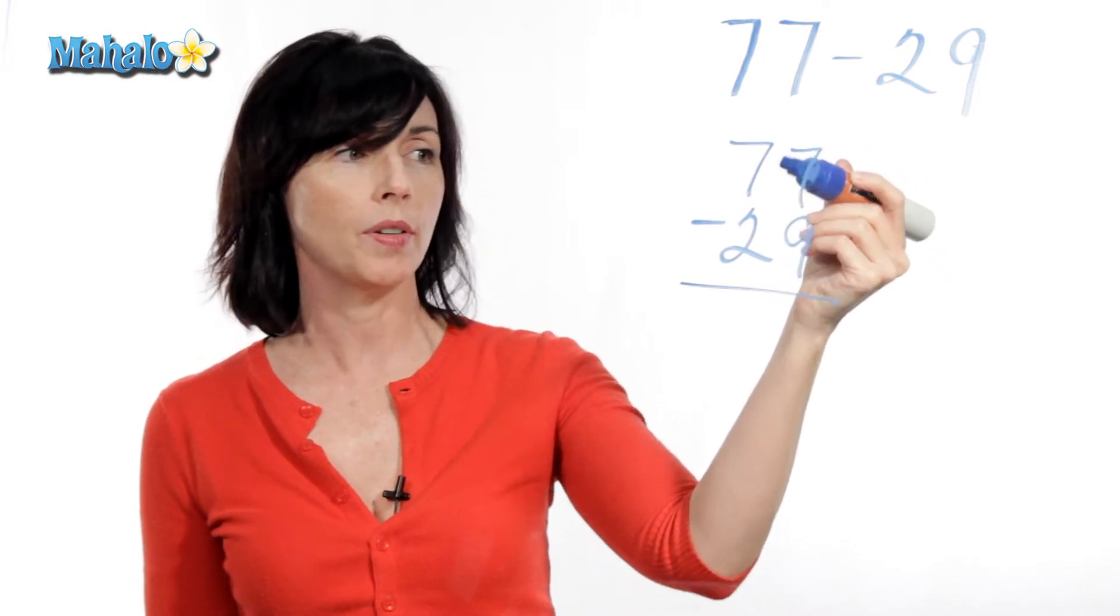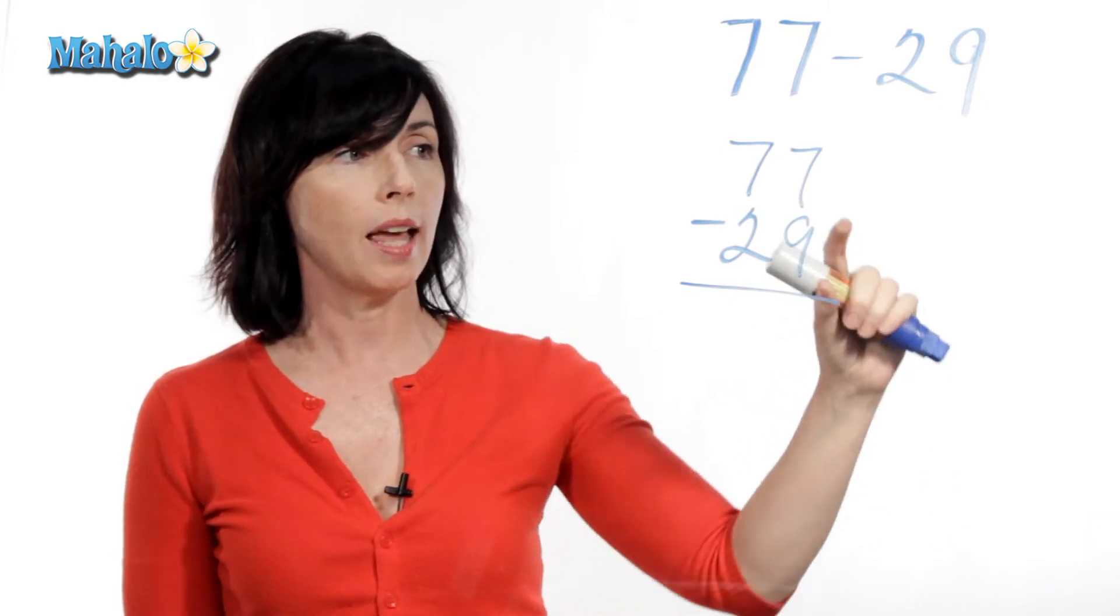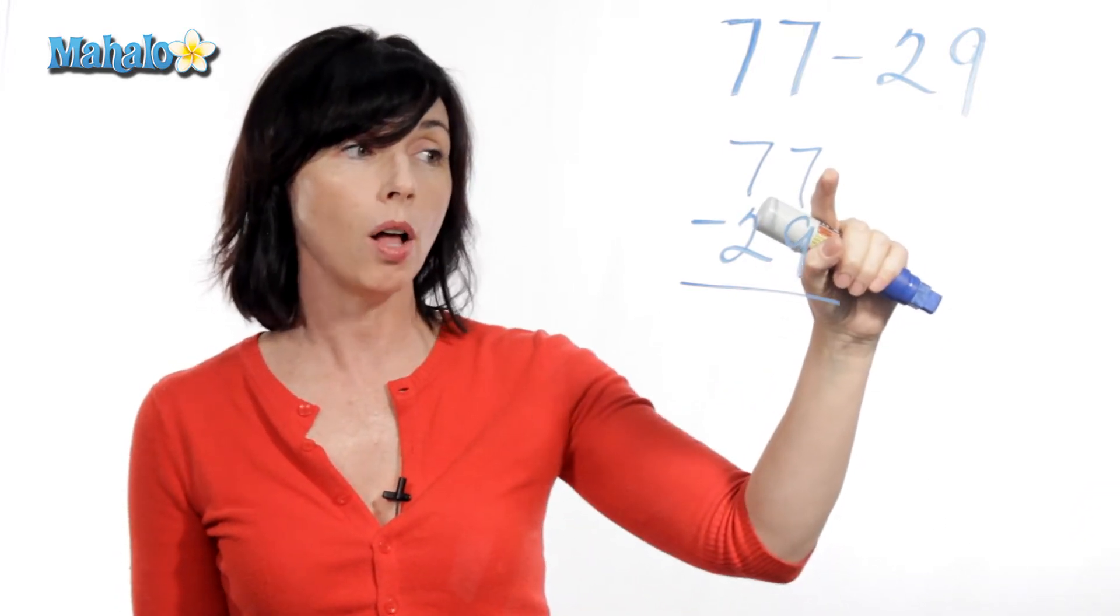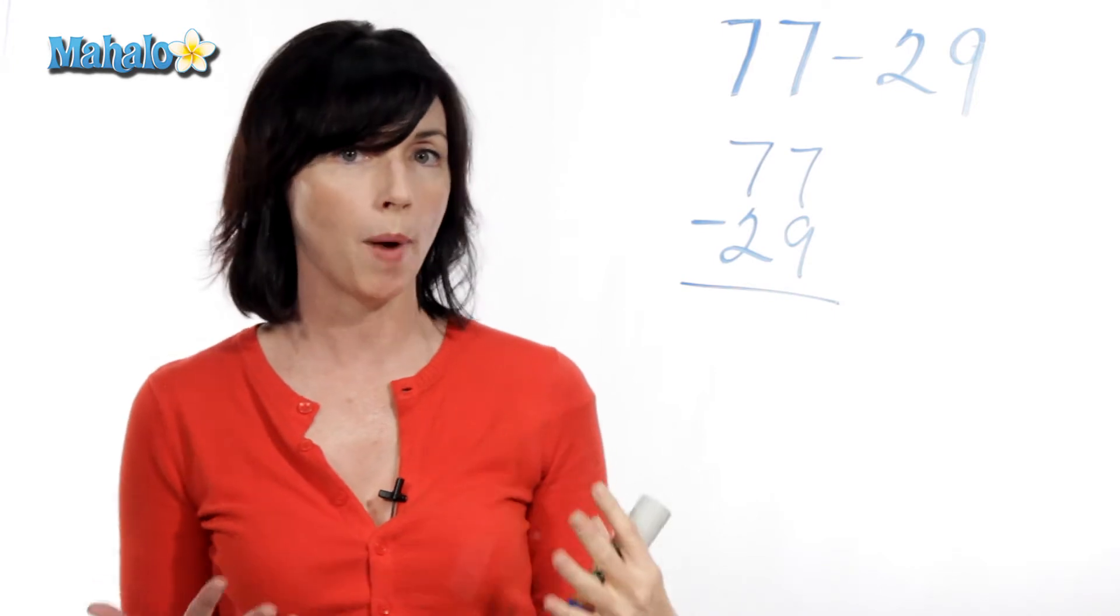It looks like I'm doing seven minus nine. Any time that you're doing this and the number on the top is smaller than the number on the bottom, you have to do what's called borrowing.